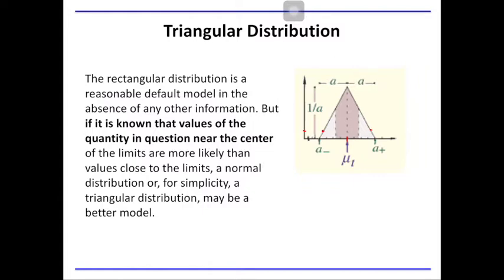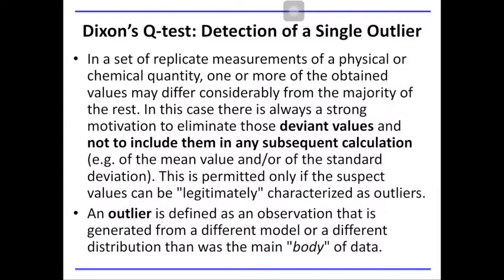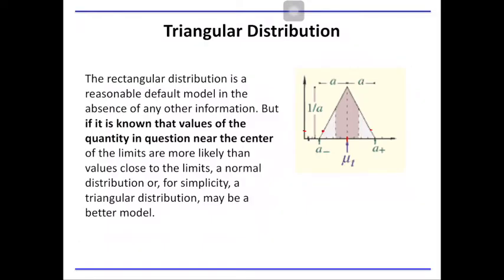So there is a small likelihood that extreme values at the high and low ends have a high probability of occurring in the measurement. In that case, triangular distribution is a better model. The uncertainty in triangular distribution is determined by standard deviation over square root of 6.